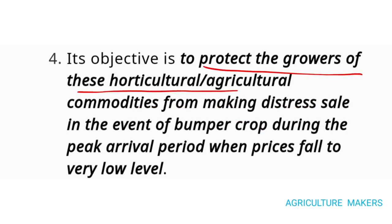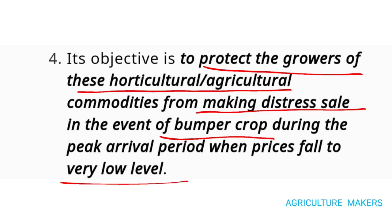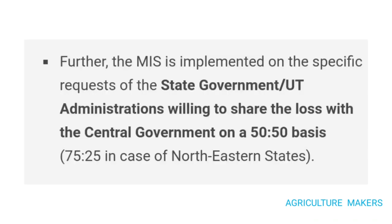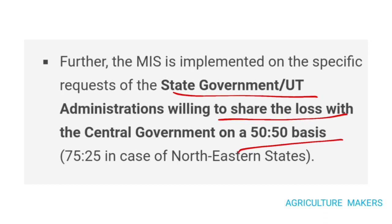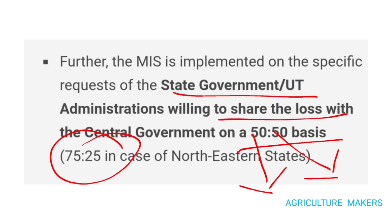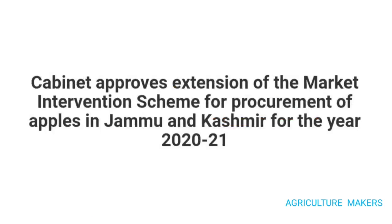Its objective is to protect the growers of horticulture or agriculture commodities from making distress sales in the event of a bumper crop during the peak arrival period when there is a fall in price to a very low level. It is implemented on the request of the state government or the union territory administration while willing to share the losses with the central government on a 50-50 basis. It is 75:25 in case of the northeastern states — 75% shared by the Government of India and 25% by the northeastern states.